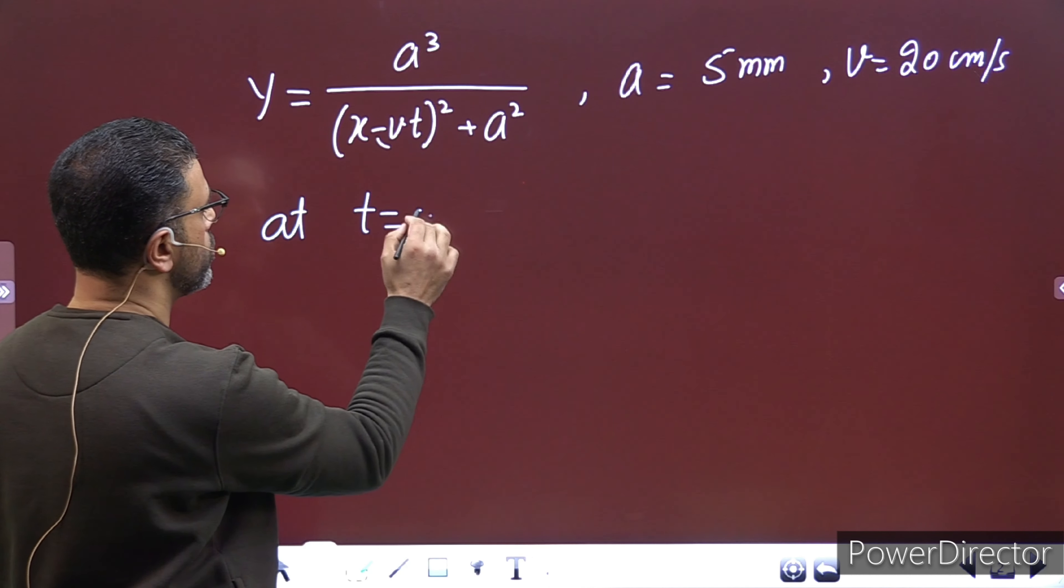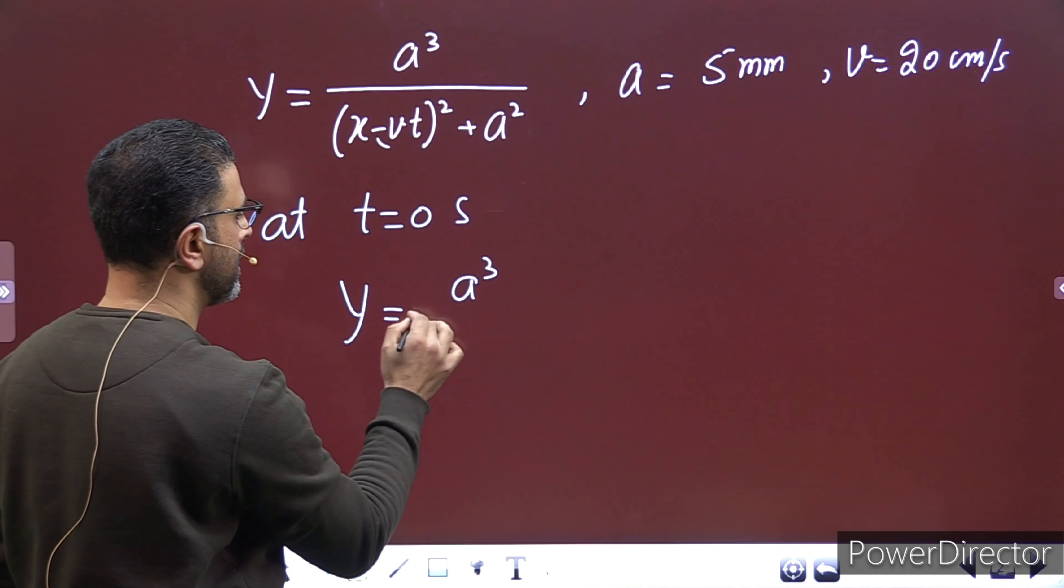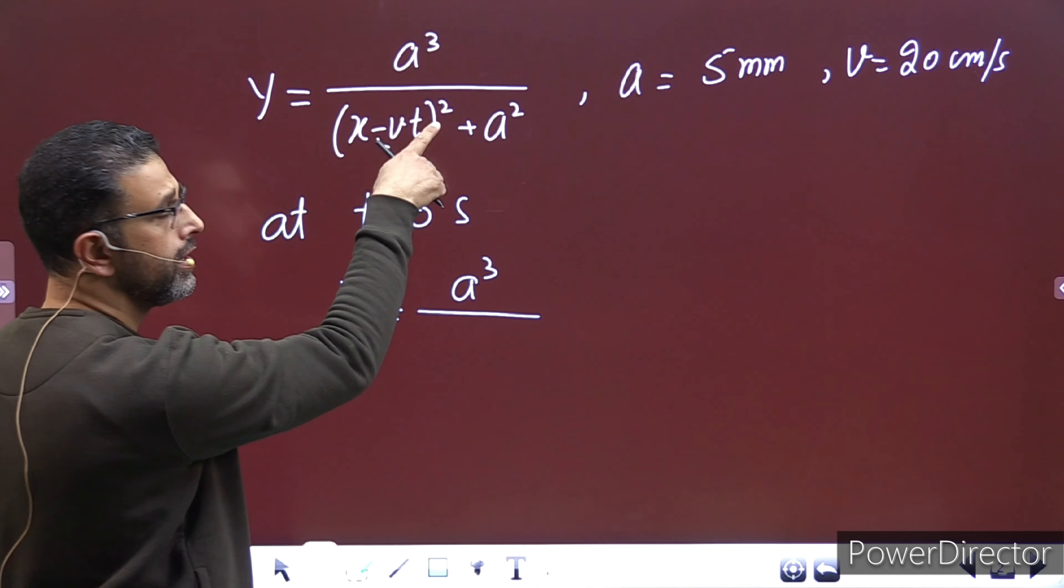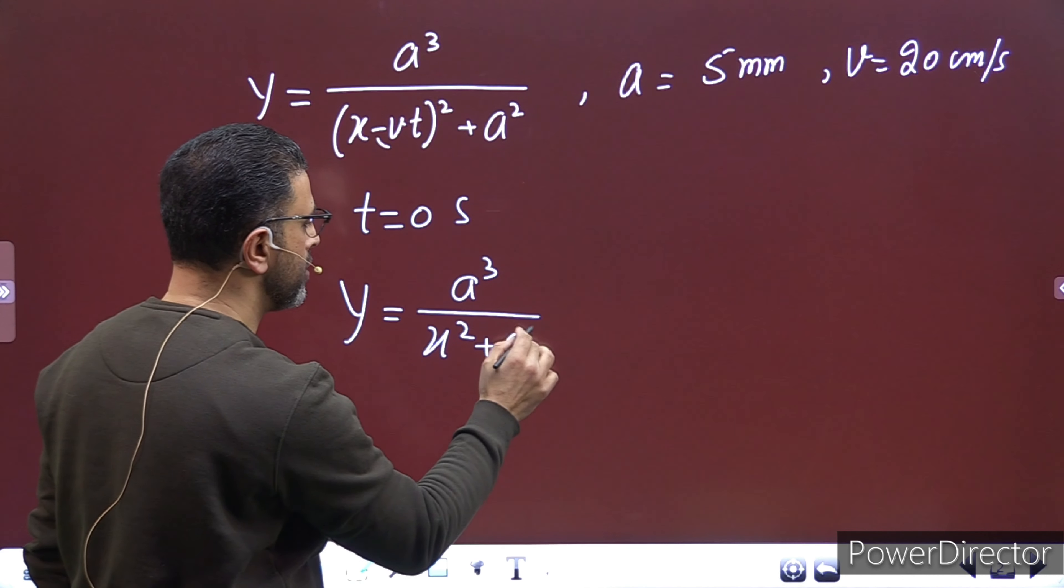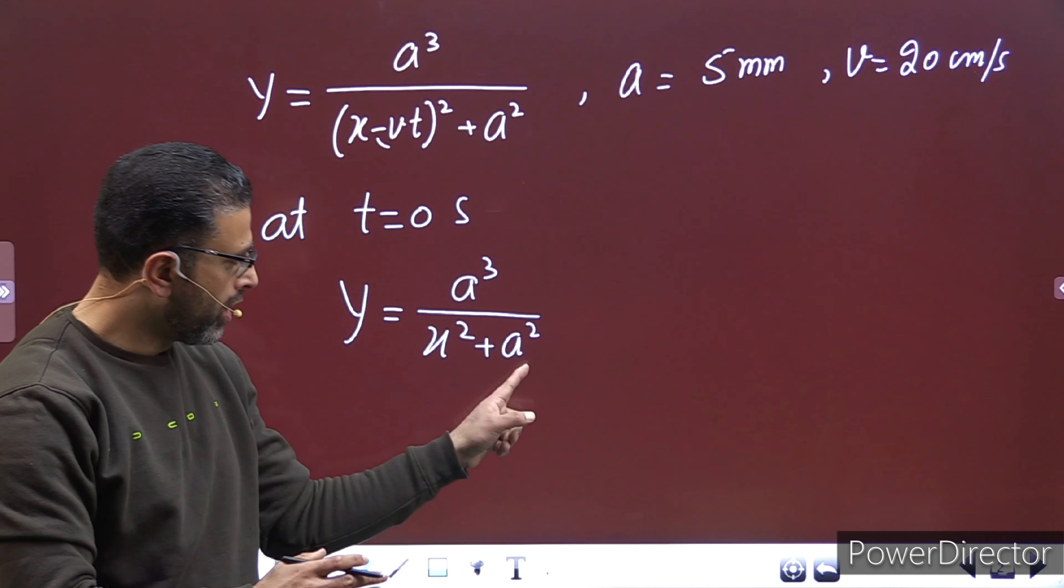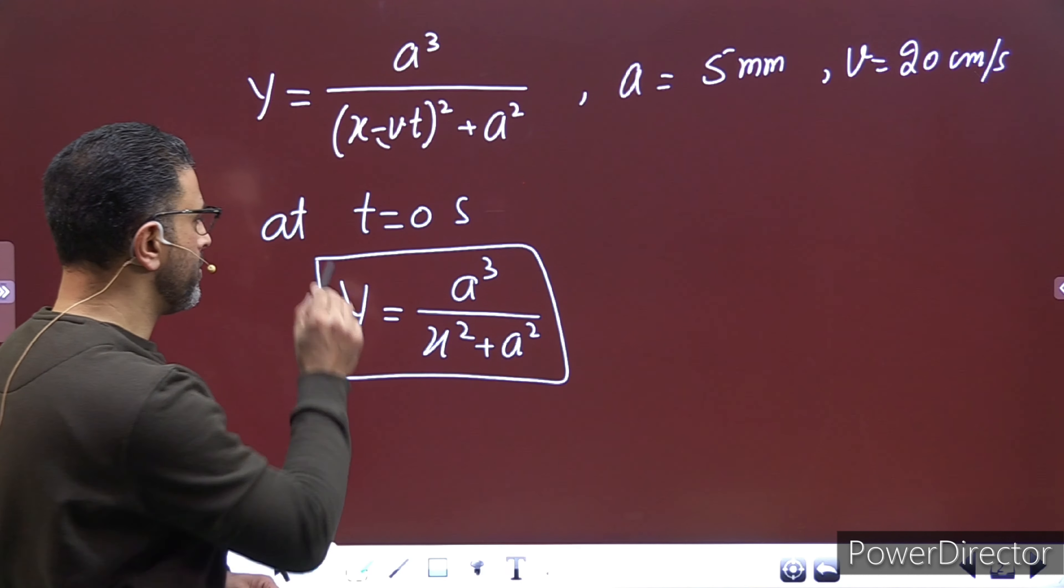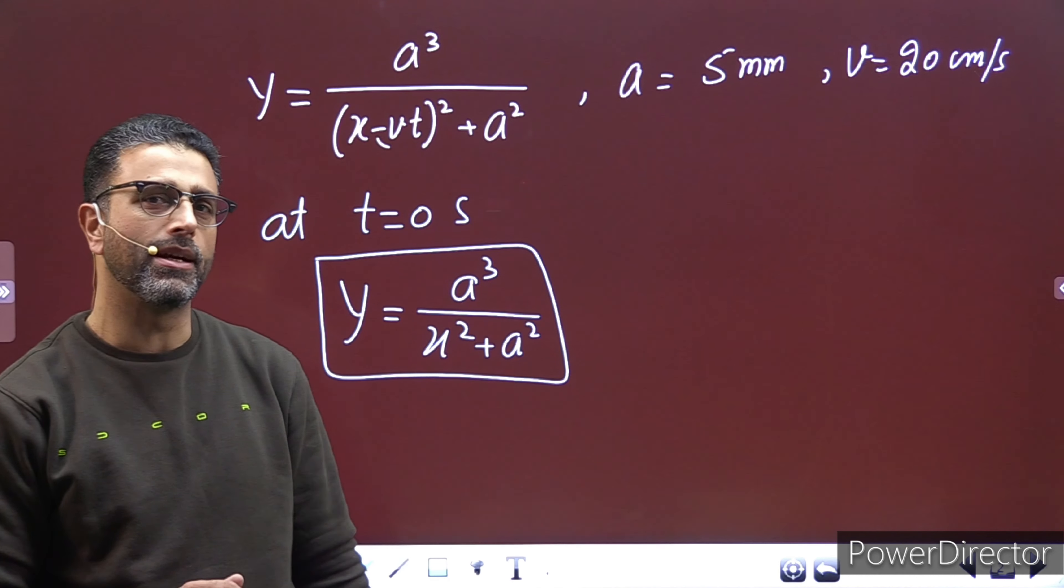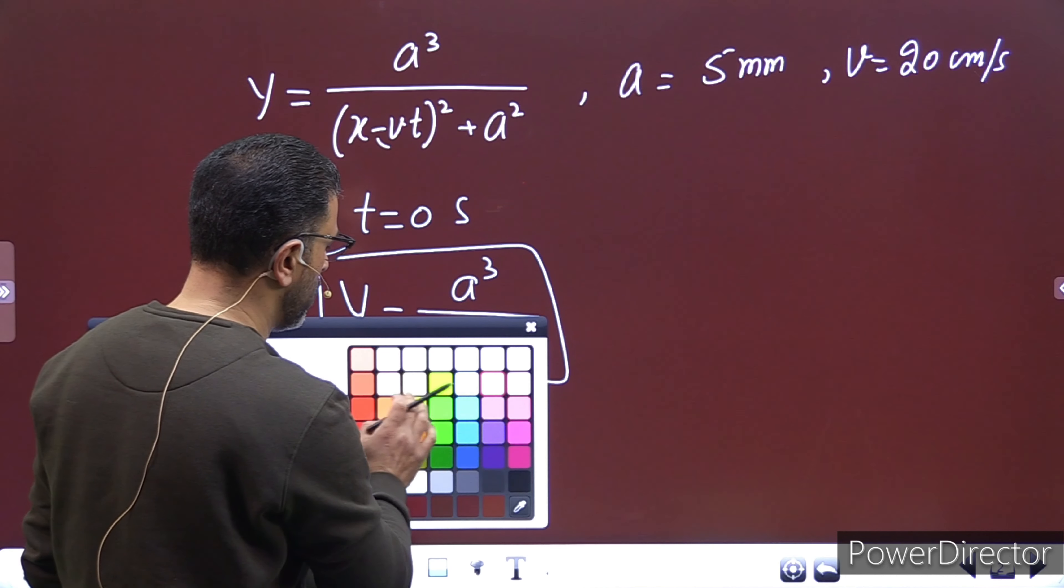At t equal to 0 seconds, y is equal to a cube on top, divided by - t is zero, so this becomes zero, only x remains but with square. So x square plus a square. This is a standard equation, constant over constant plus x square on the bottom. So this graph has a standard shape, we'll draw it shortly, but a couple more things about this graph will give us understanding of how the graph will look.